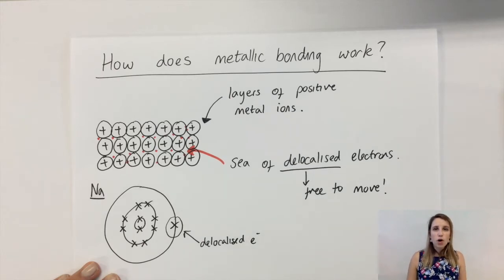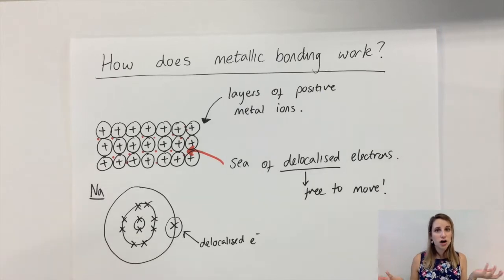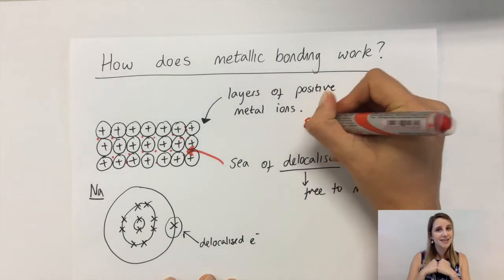In terms of what holds this whole structure together, it's really similar to ionic bonding. Because in ionic bonding, you've got positive and negative ions that are attracted through electrostatic attraction.